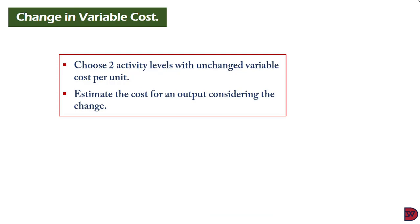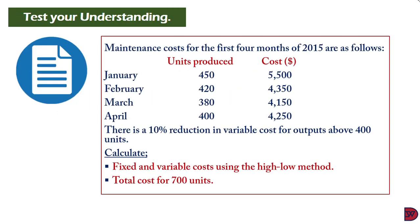Let's test our understanding again with the same maintenance cost data. There is now a 10% reduction in variable cost for output above 400 units. We need to calculate fixed and variable cost using the high-low method, and also the total cost for 700 units. As the theory suggests, I pick two activity levels within the unchanging variable cost range.